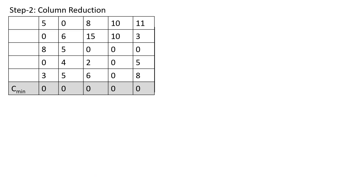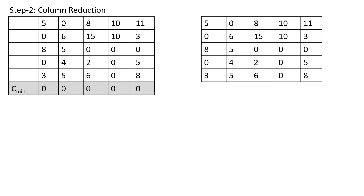Once row reduction is finished, the next step is column reduction. We identify each column's minimum. Since each column already has a zero value, all column minimums are 0. Subtracting zero from each value keeps the matrix the same, so the column-reduced matrix is identical to the row-reduced matrix. With phase one complete, we move to phase two: optimization.